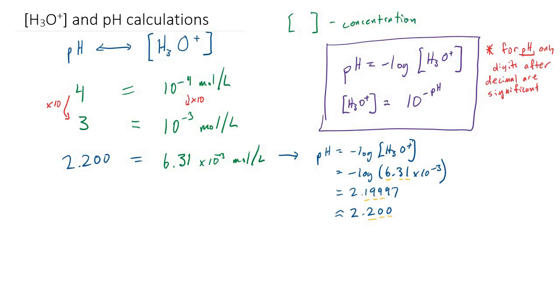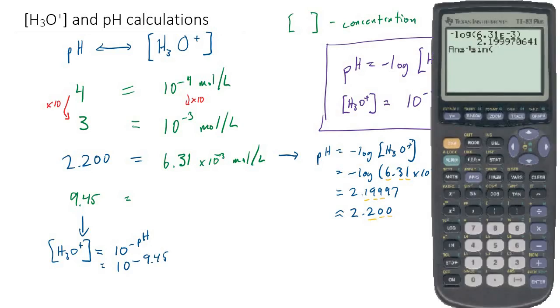So let's try one example the other way. Let's suppose we have a pH of 9.45 and we want to know the hydronium ion concentration. So we know that the hydronium ion concentration is equal to 10 to the negative pH. So in our case that is going to be 10 to the minus 9.45. So that is 10 to the power of 9.45.